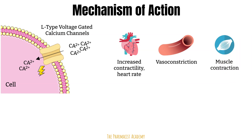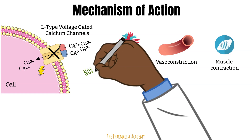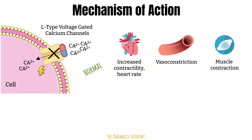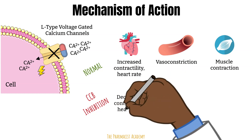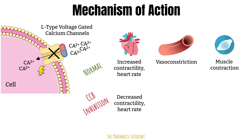When a patient takes a calcium channel blocker, it blocks this channel and prevents calcium from moving into the cells. So compared to normal circumstances, blocking this channel results in decreased contractility and heart rate. In the blood vessels, we will have vasodilation. The skeletal muscle effect is not as important in clinical practice.